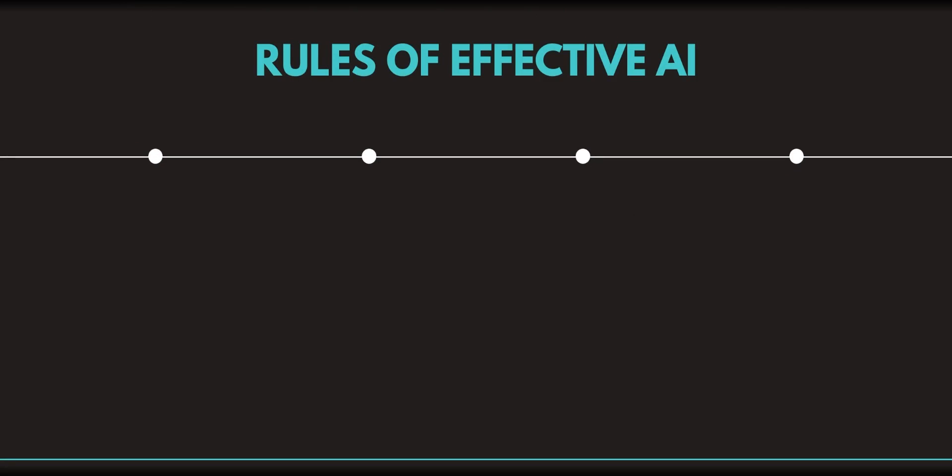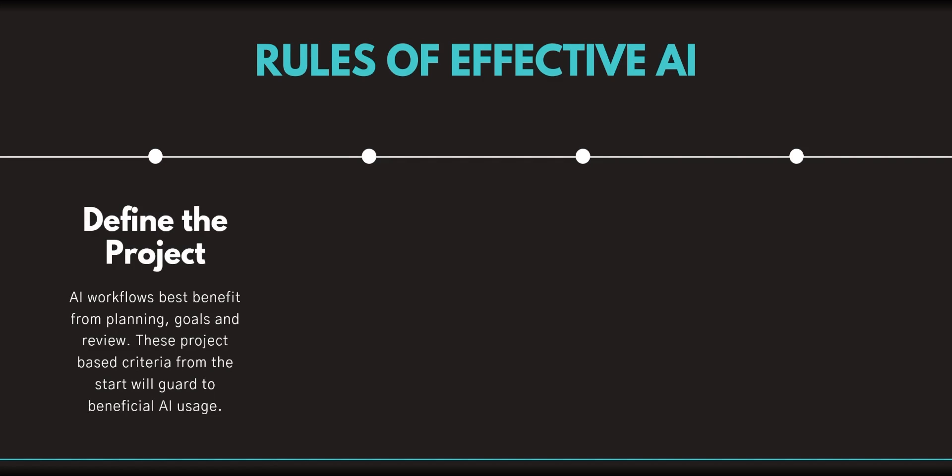Here are some rules of effective AI. As you're going through and learning about what is valuable when using AI, think first about how you're defining your projects. AI workflows work best when you're benefiting from planning, goals, and review. These project-based criteria from the start will help guard beneficial AI usage versus using it and letting the tool get out of control. A defined project will keep parameters that really give you more control in making goals, and helps you refine your approach and choose the best tool over time.